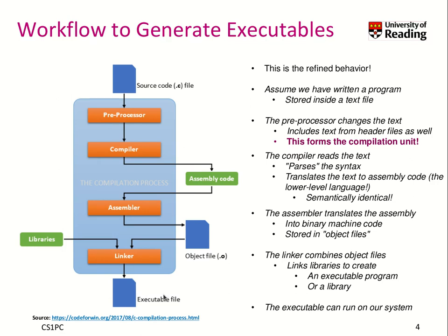We haven't talked much so far about the additional steps done by the compiler. First, the compiler runs a so-called preprocessor, which handles all those macros and directives starting with the hash sign. Then the compiler runs and produces our assembly code for the machine architecture.